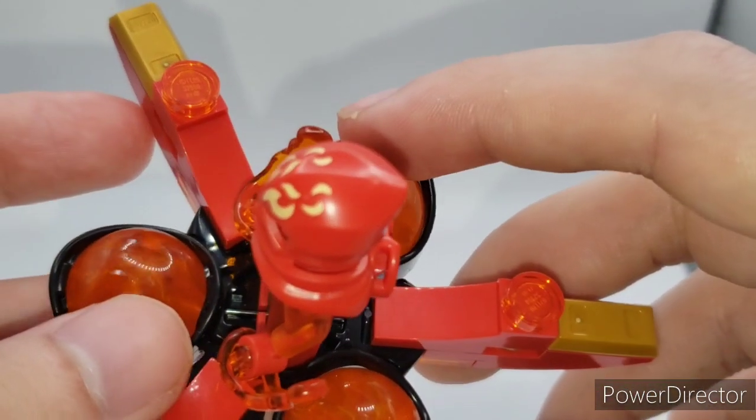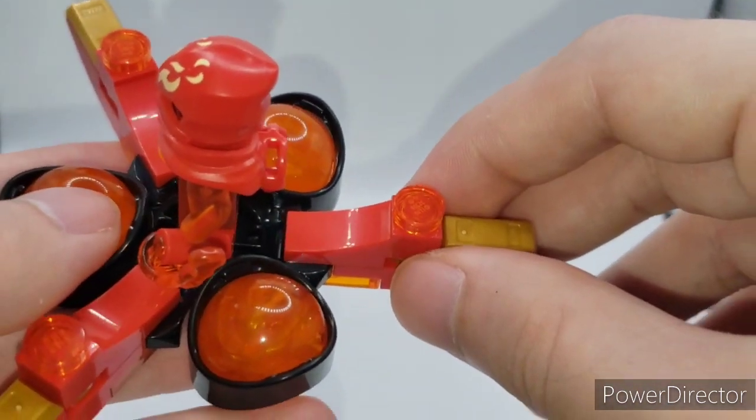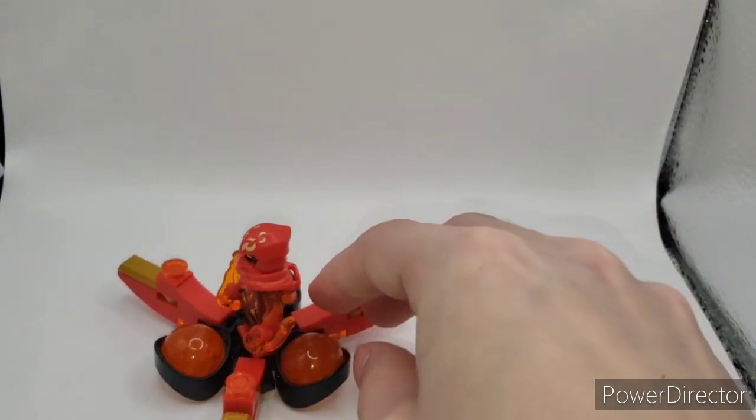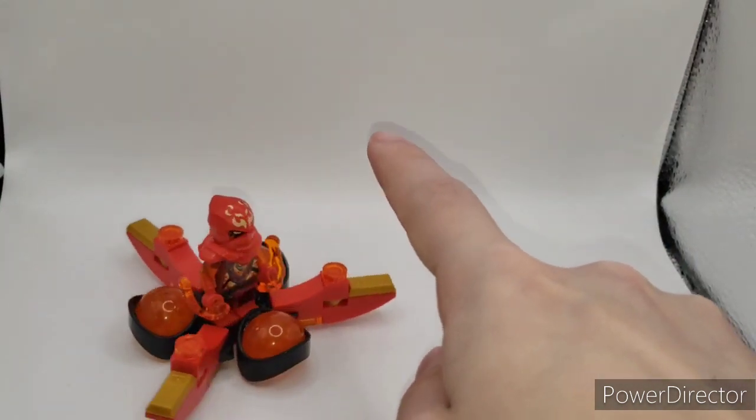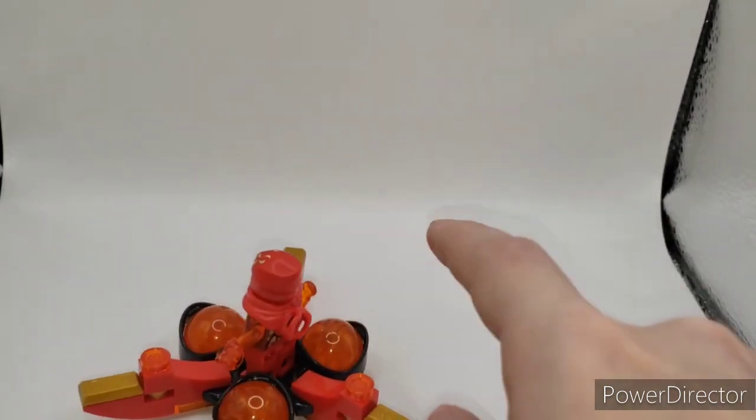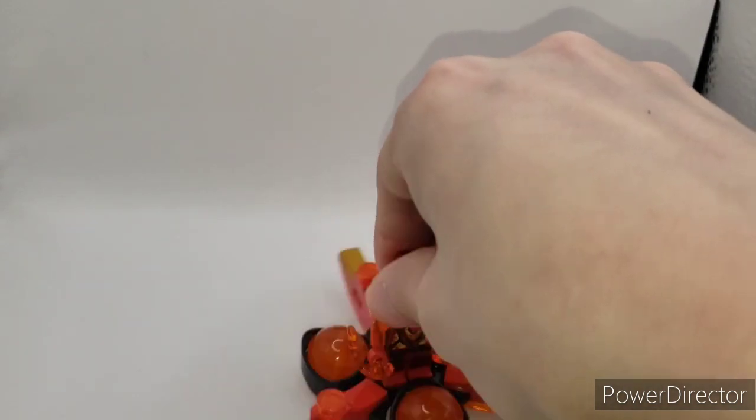You have the orange Dragon Energy cores, I think these are exclusive to this set, but basically, for the function of the set, you can flip it, you can slightly spin, but not a whole lot.